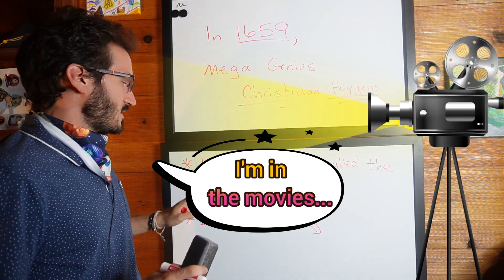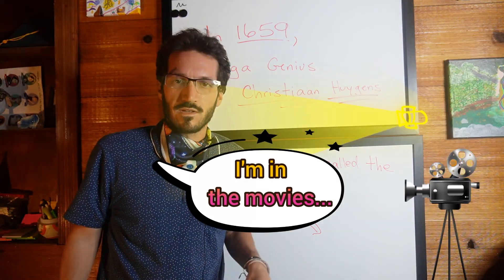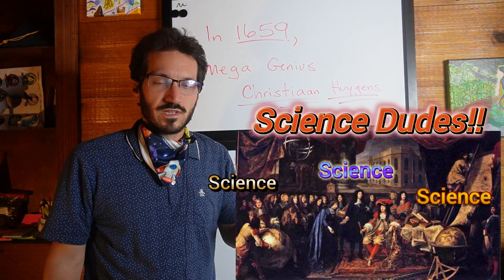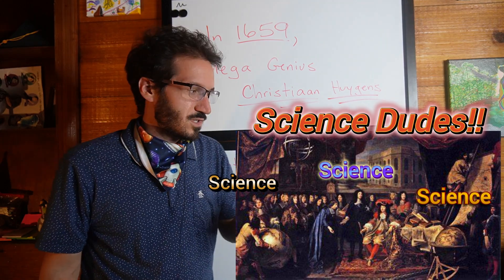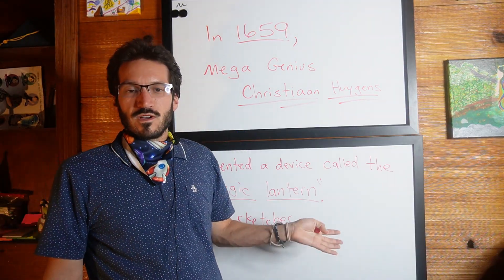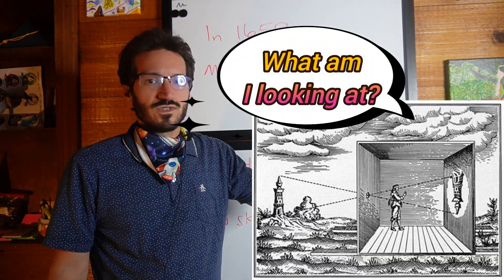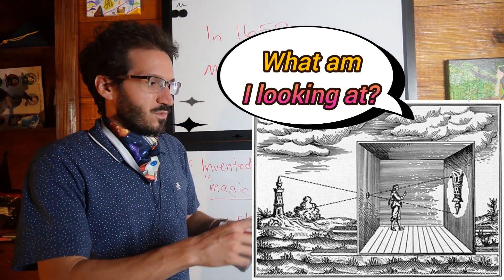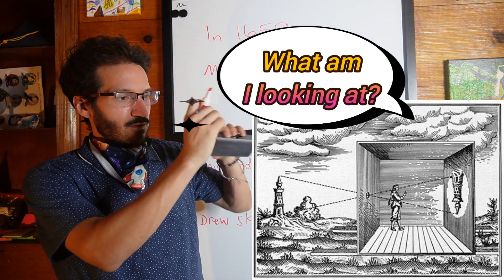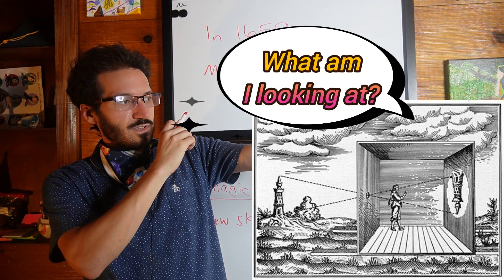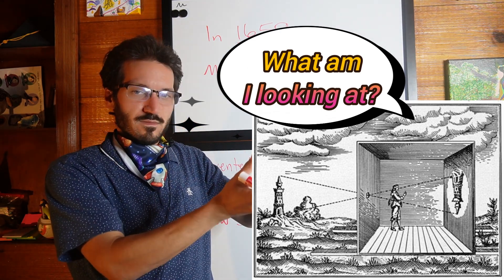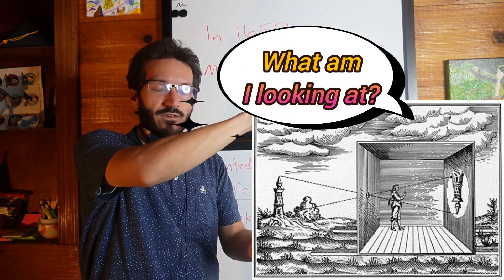At this time in the 1650s, there were other European dudes also working with lenses and early projectors. There was something called the camera obscura, an old-timey invention with a little pinhole that let light through to project an image on the other side. Usually that image would be completely inverted and flipped.